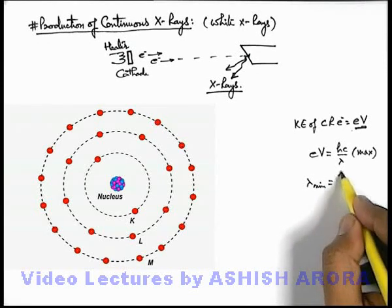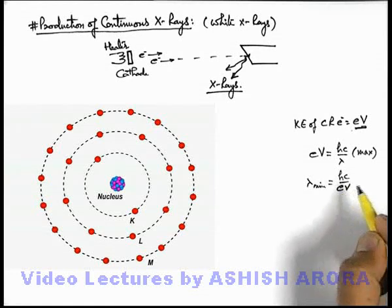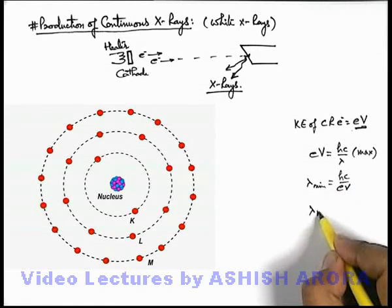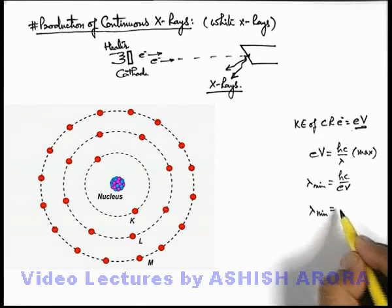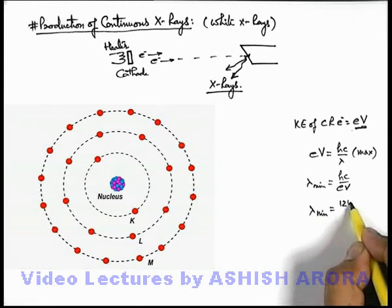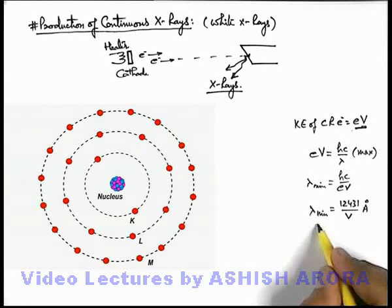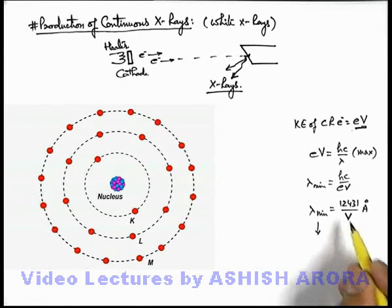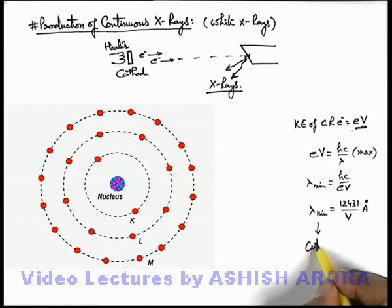by the electron this will be hc by eV and here hc and e are constants. We substitute the values, the value of minimum wavelength will be 12431 by V in angstrom, this we already studied. And this minimum possible wavelength of x-rays which are emitted from the discharge tube depends on the potential difference applied and it is called cut-off wavelength